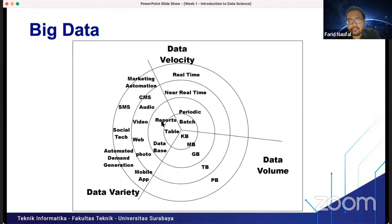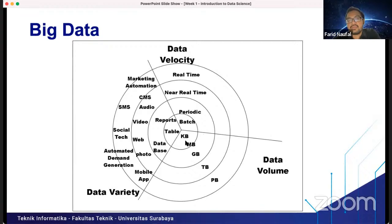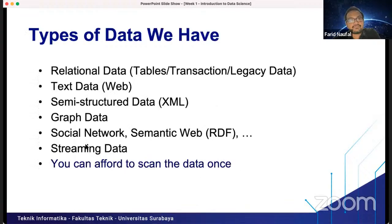For table data — for example, a table you create in a webpage — the data velocity is batch and the data volume may be only kilobytes or megabytes. So those are the forms of data: variety, velocity, and volume.